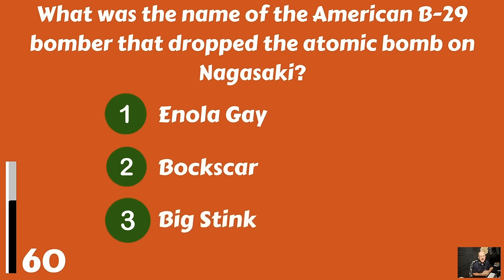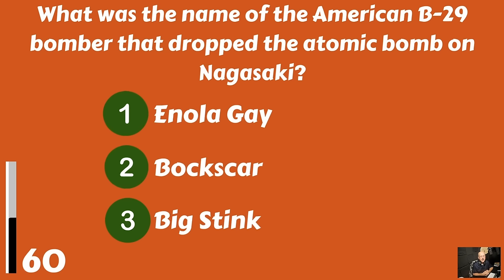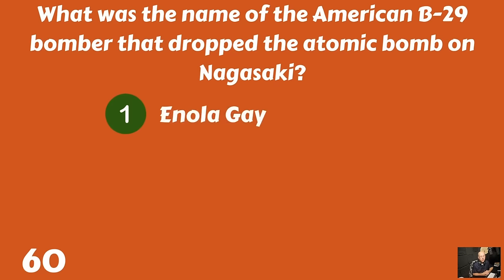What was the name of the American B-29 bomber that dropped the atomic bomb on Nagasaki? Was it the Enola Gay, the Bockscar, or the Big Stink? And that airplane was the Enola Gay.